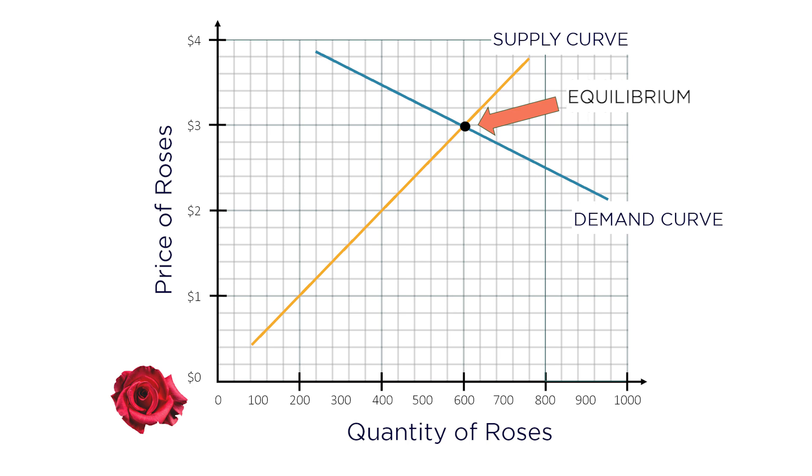In this case, consumers are willing to pay $3 per rose for 600 roses, and producers are willing to supply 600 roses at a price of $3 per rose. Everyone's happy.